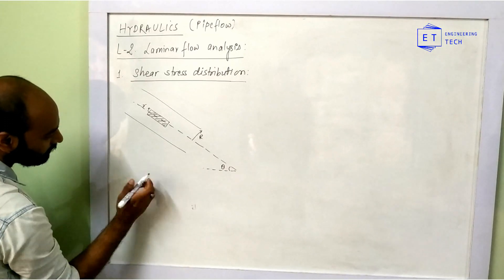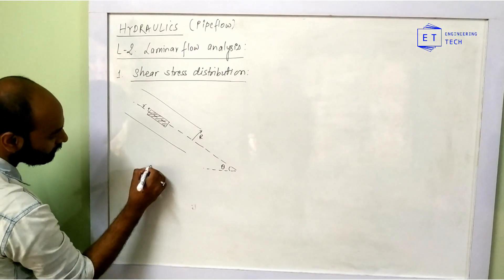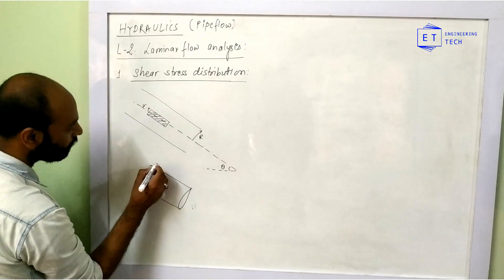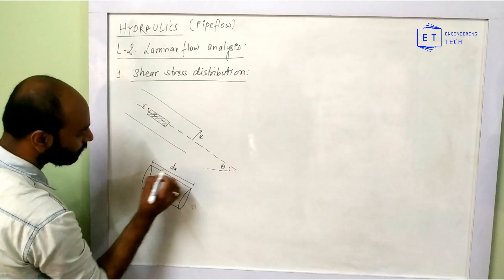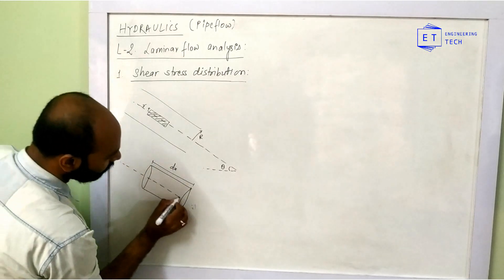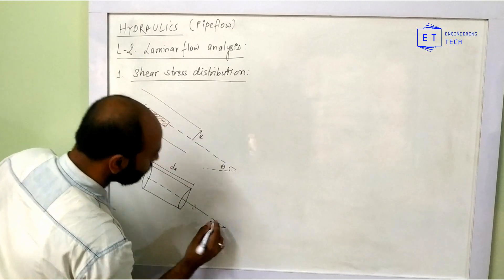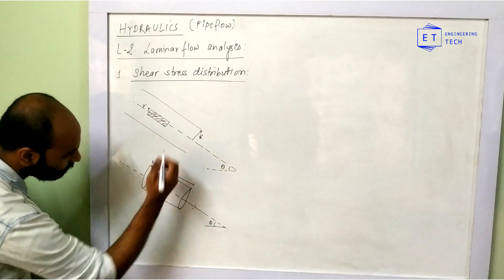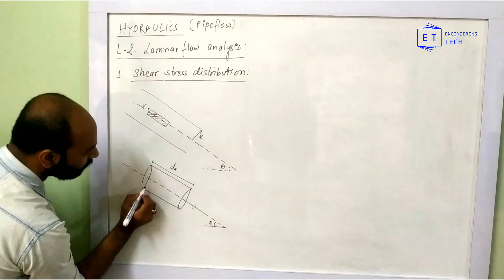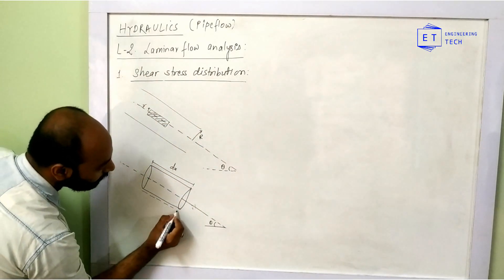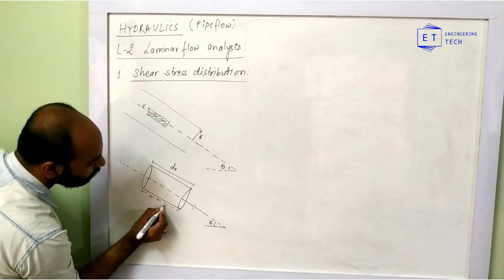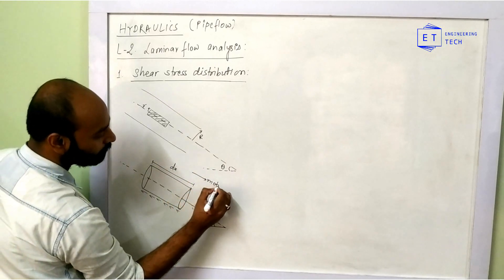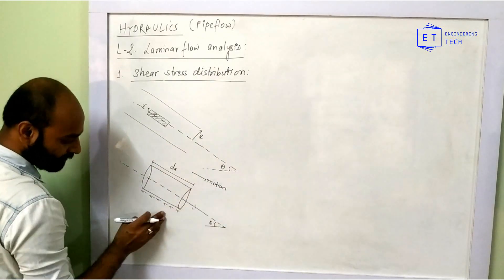This is the fluid element of length dx, with a center line at a certain angle. In this fluid element, I am going to assume the shear stress distribution. Suppose the fluid is in motion — against the motion, we also have the shear stress distribution.